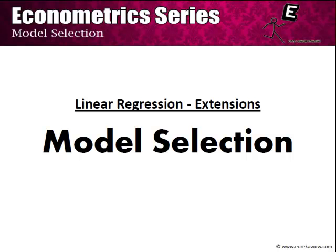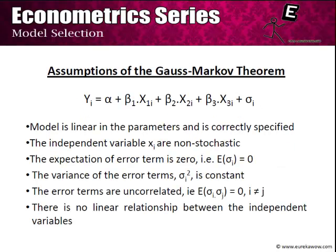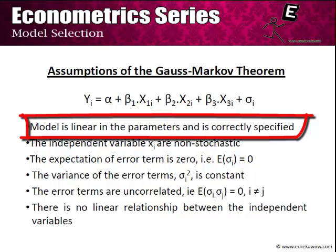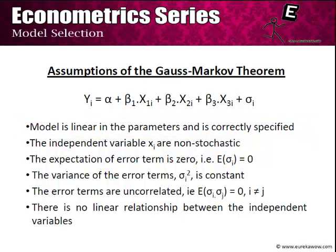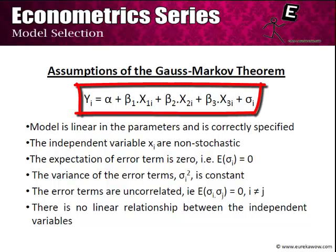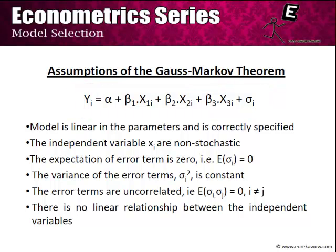The first thing to do in regression is to select the correct model. This becomes important because one of the first assumptions of the Gauss-Markov theorem is that the model is linear in its parameters and is correctly specified. The thinking behind this is that there exists a real model which explains the population, such as yi = alpha + beta1*x1i + beta2*x2i + beta3*x3i + sigma_i. However, this model is not known to us, and hence we have to come up with a model that reflects the true population model. In doing so, we can make certain errors.